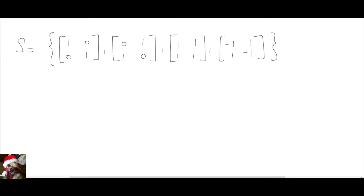Let's find the basis of this set of 2x2 matrices. We have four elements in the set and they're 2x2 matrices, and we want to find the basis for the set. The first thing we have to do is identify each of the matrices as a vector, then set up a linear combination and solve it.